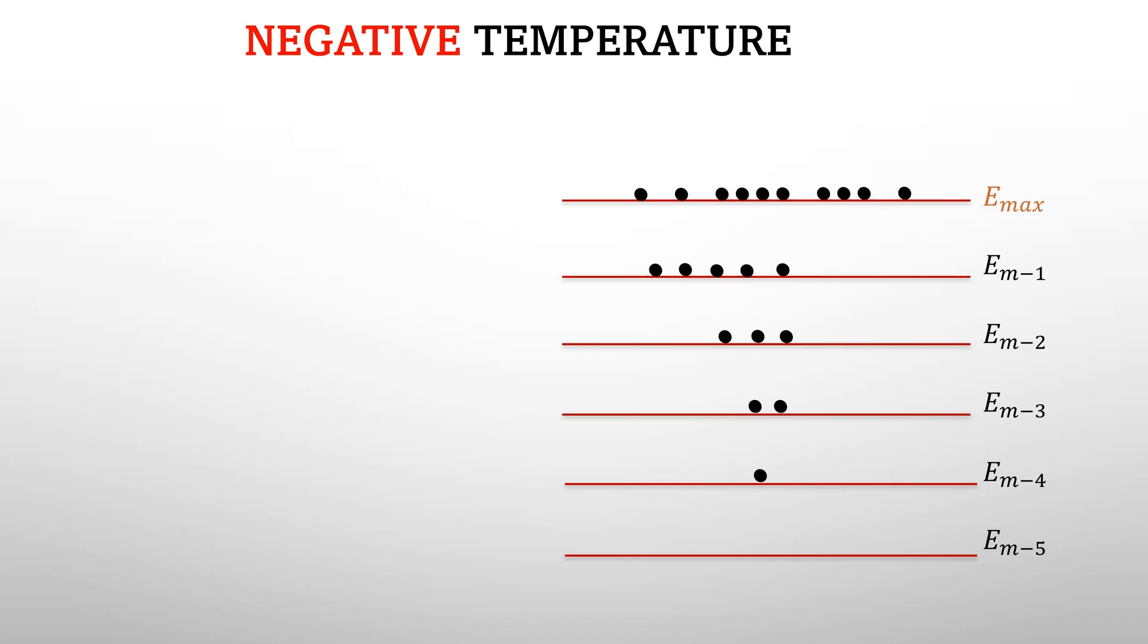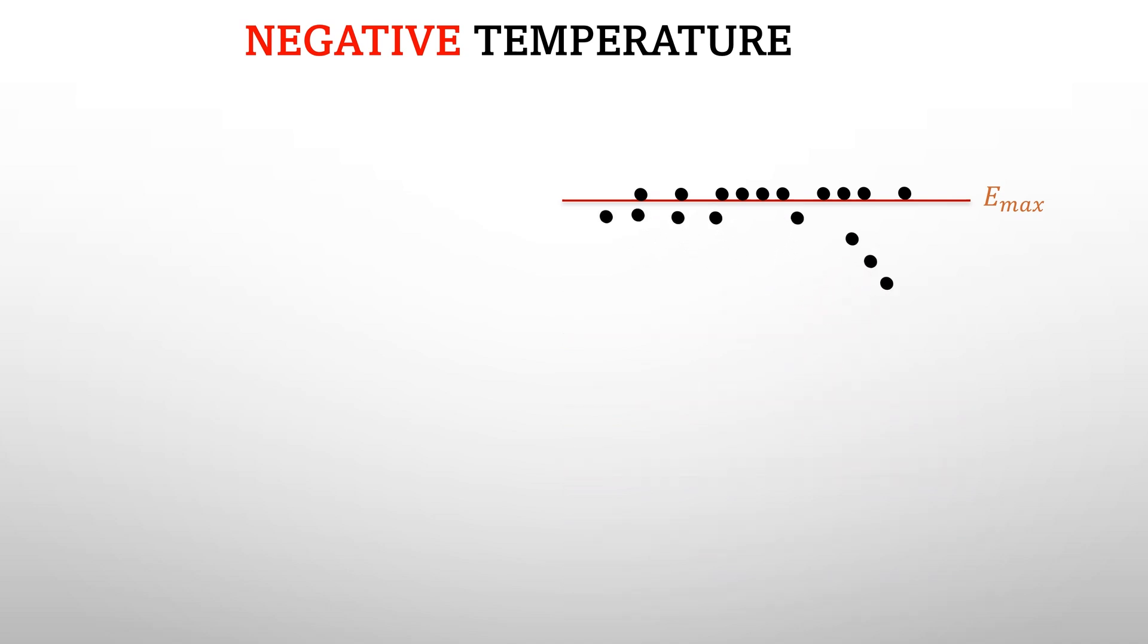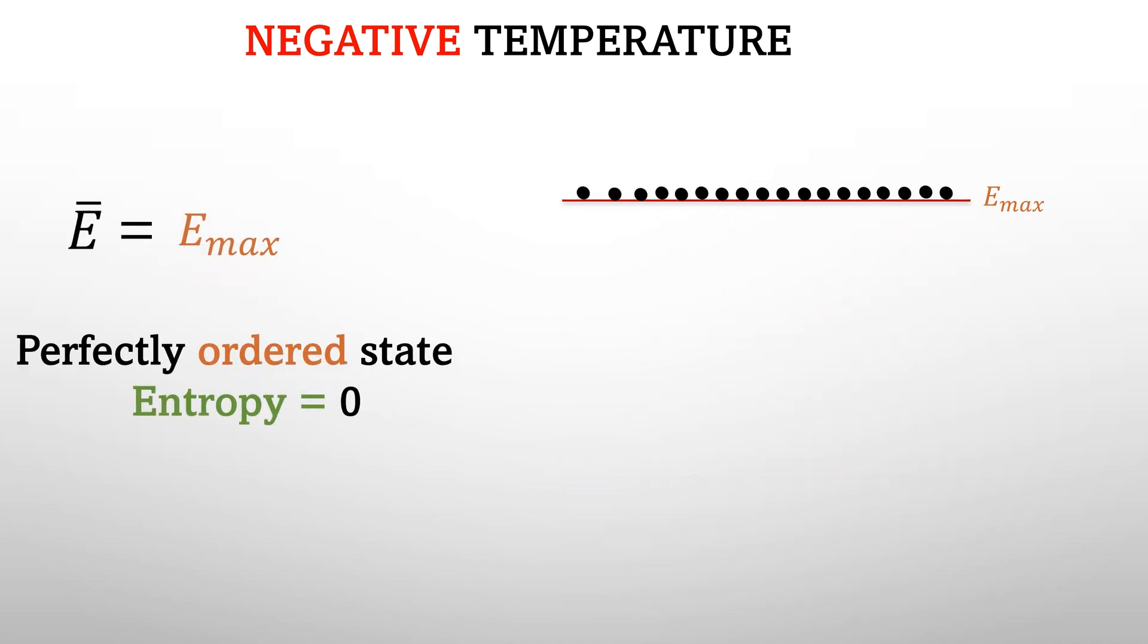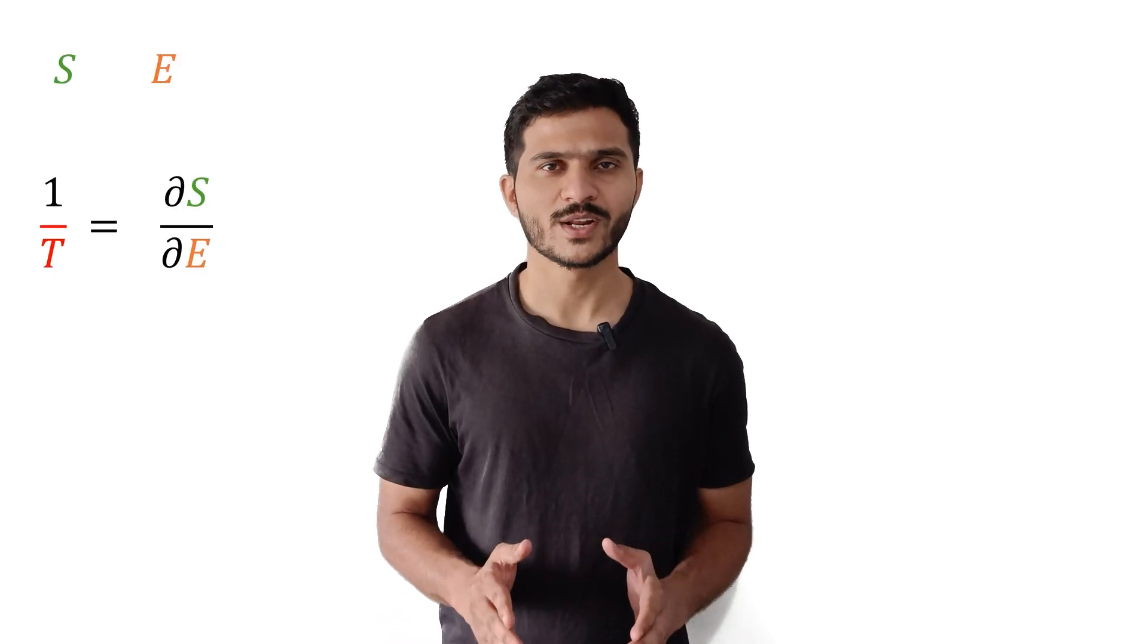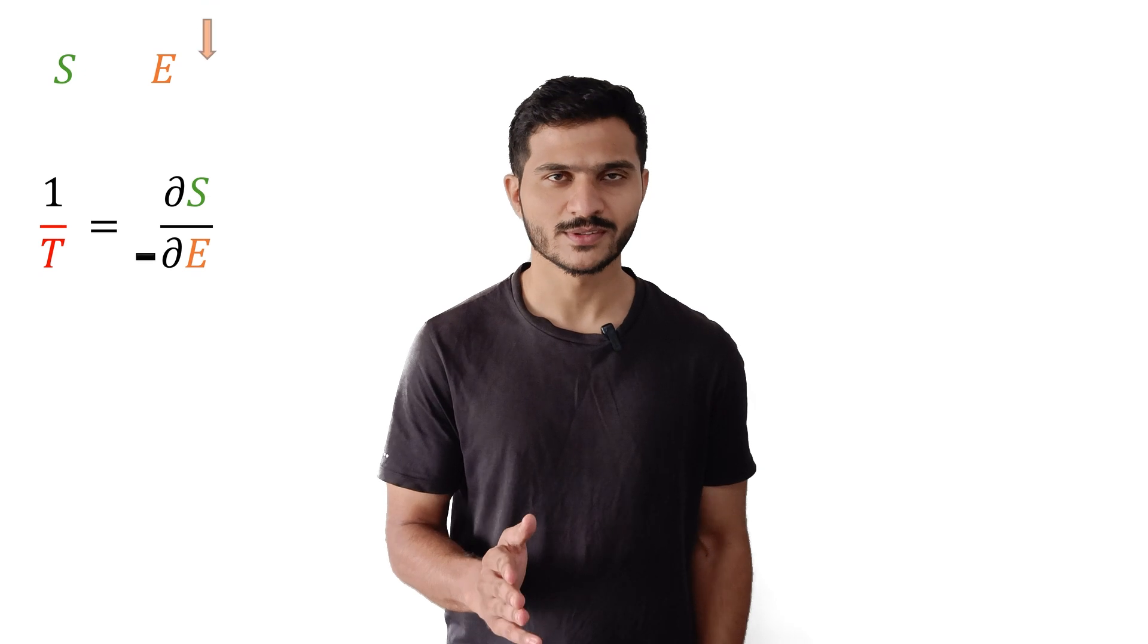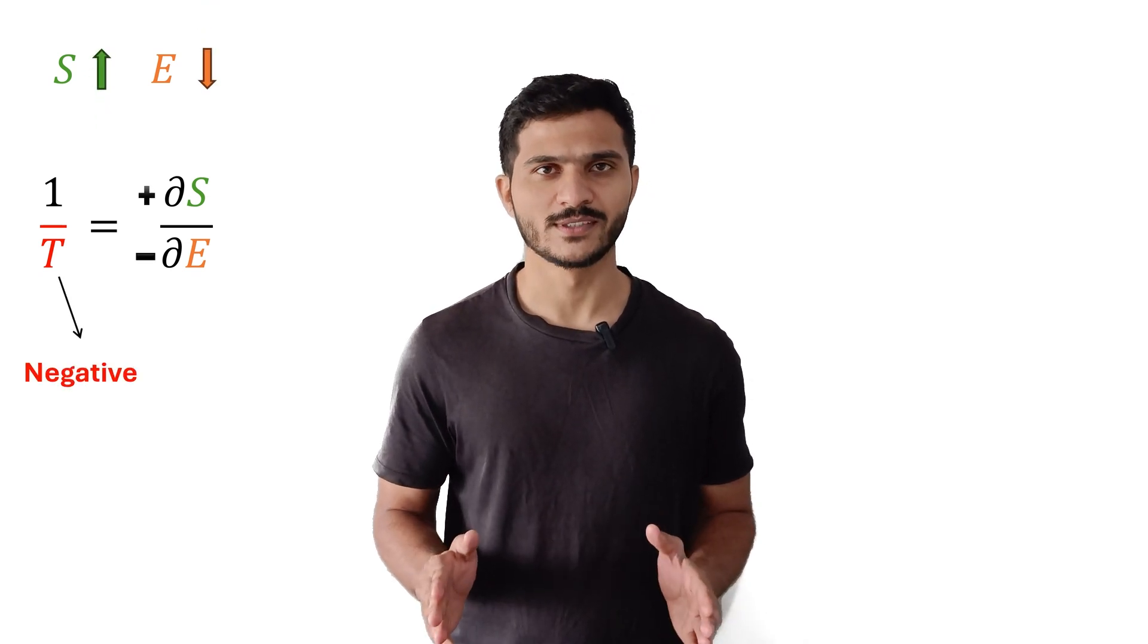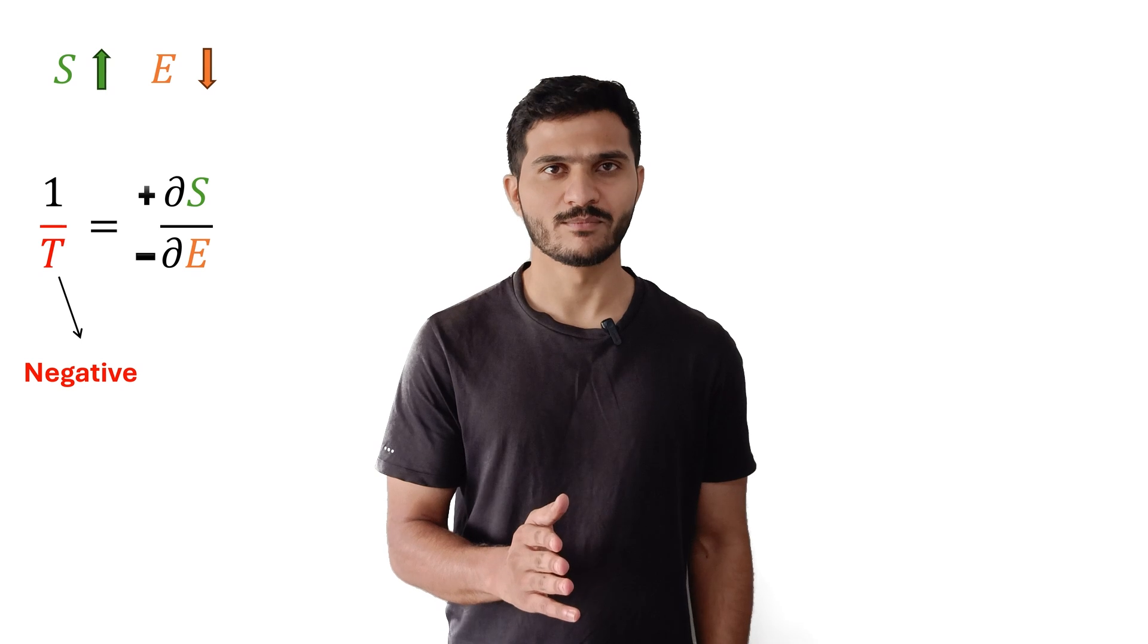And when all the particles occupy highest energy state, the system is perfectly ordered. Hence if you think by formal definition of the temperature, in negative temperature systems, the decrease in energy increases entropy of the system, hence negative value for the temperature.